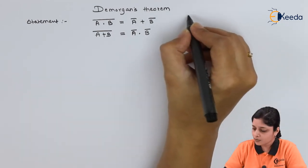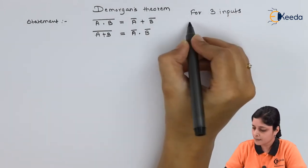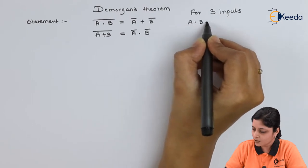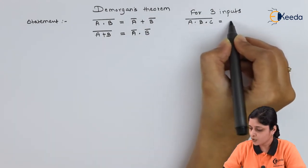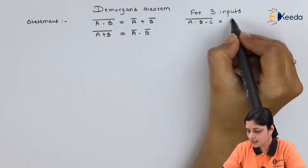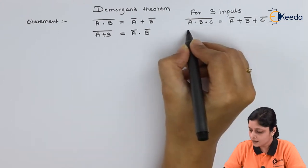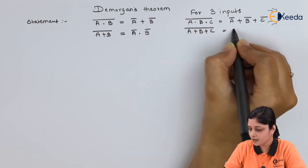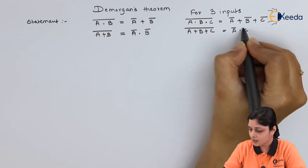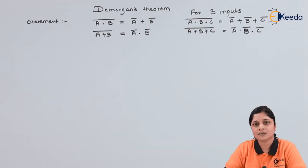For three inputs, the equation extends as follows: the complement of A dot B dot C equals A-bar plus B-bar plus C-bar. And the complement of A plus B plus C equals A-bar dot B-bar dot C-bar. In this way you write the theorems for three inputs.